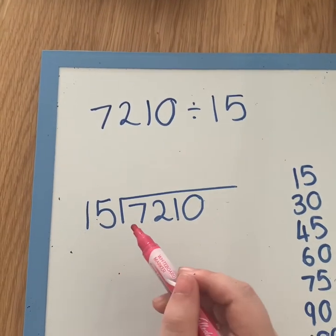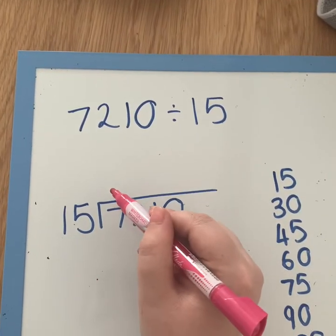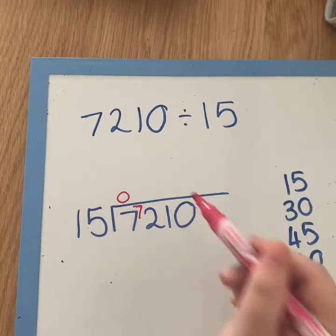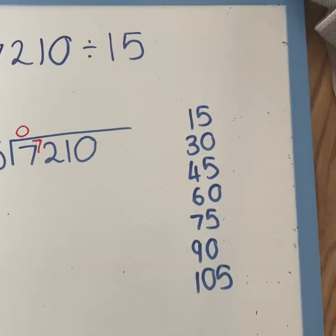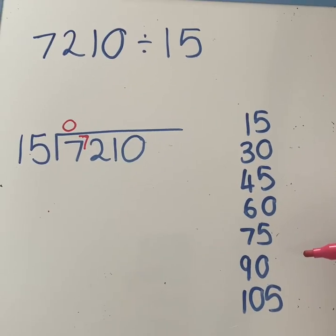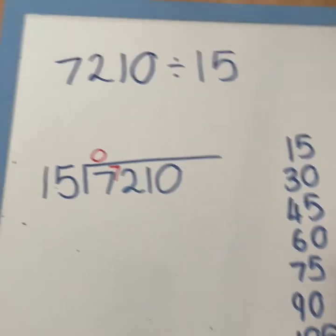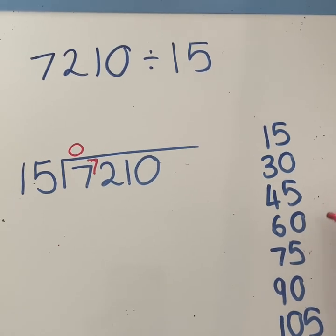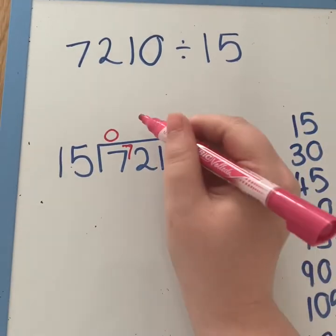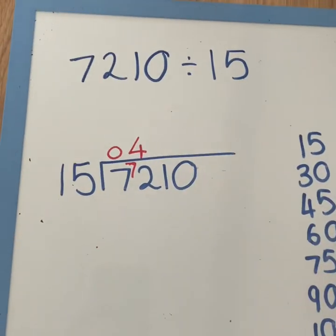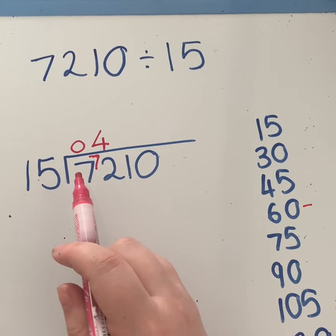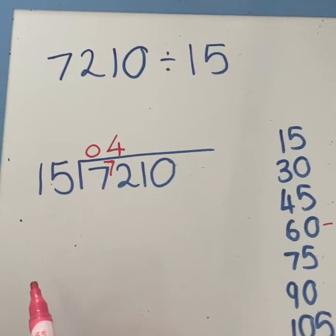So how many 15s go into 7? That would be none. 7 is too small. But now how many 15s go into 72? So I'm going to refer to my times tables that I've got here. I've only done a few. So 75 is too high. 60 is what we're going to have to go to though. So that is 1, 2, 3, 4. Go in here. And don't forget our remainder. So we stopped at 60. We're supposed to go to 72. So that gives us a remainder of 12.